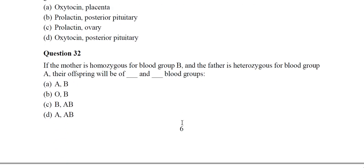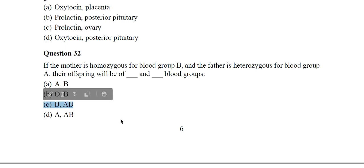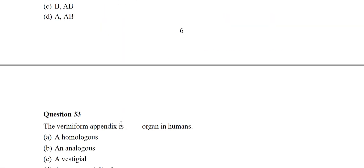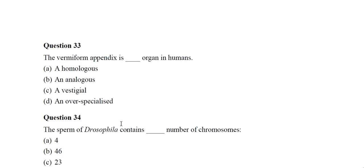Question 32: If the mother is homozygous for blood group B and the father is heterozygous for blood group A, their offspring will be of B and AB blood groups. Option C is the correct answer.